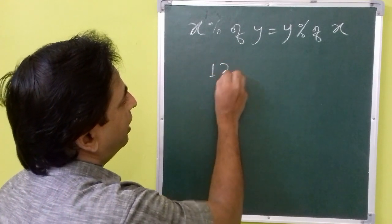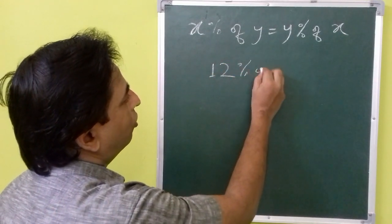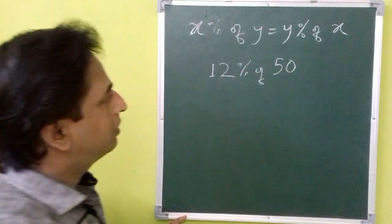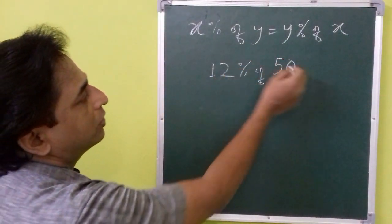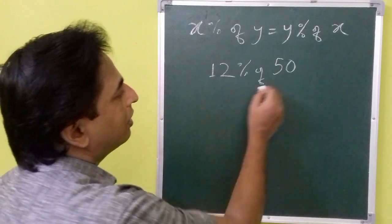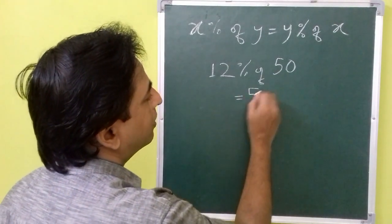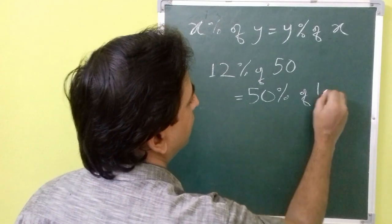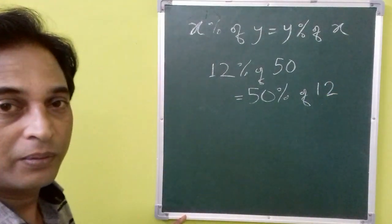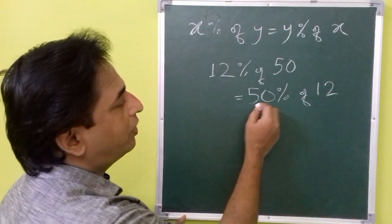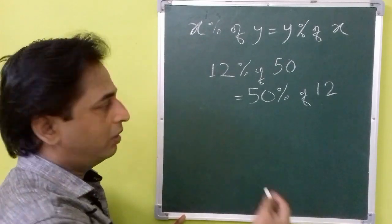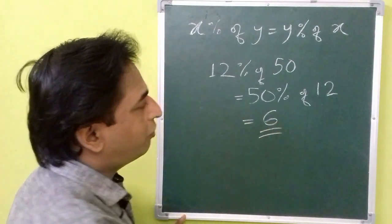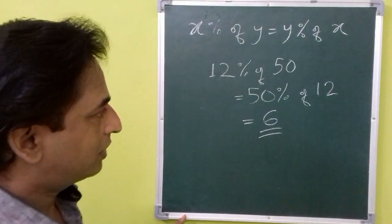Suppose we need to find 12% of 50. Instead of finding 12% of 50, we can make it equal to 50% of 12, which is easier because 50% means half, so the answer is 6. You can find it a little faster.